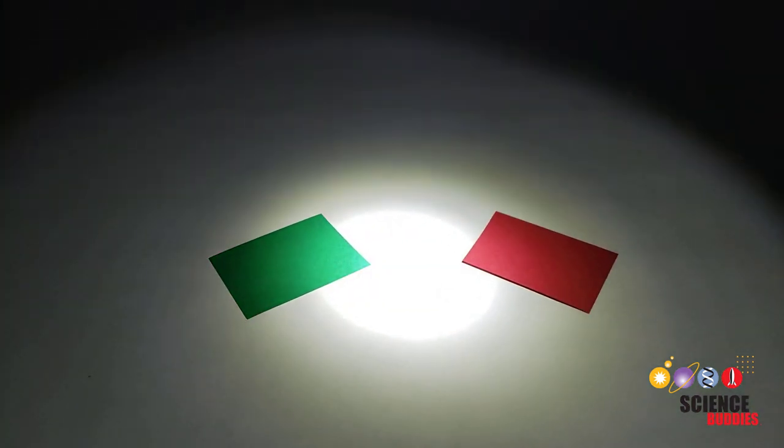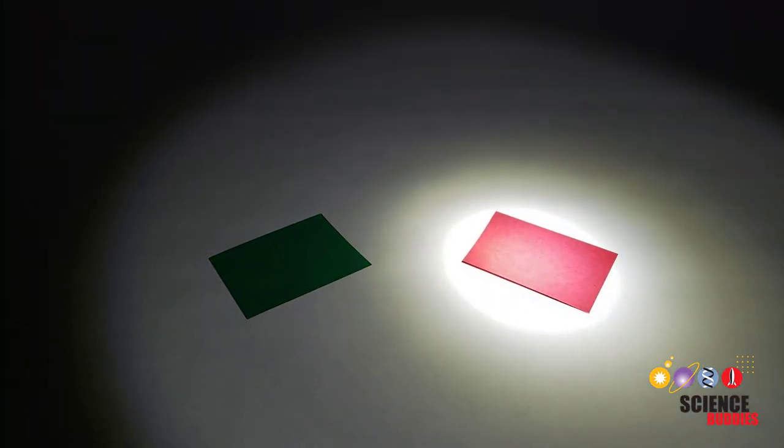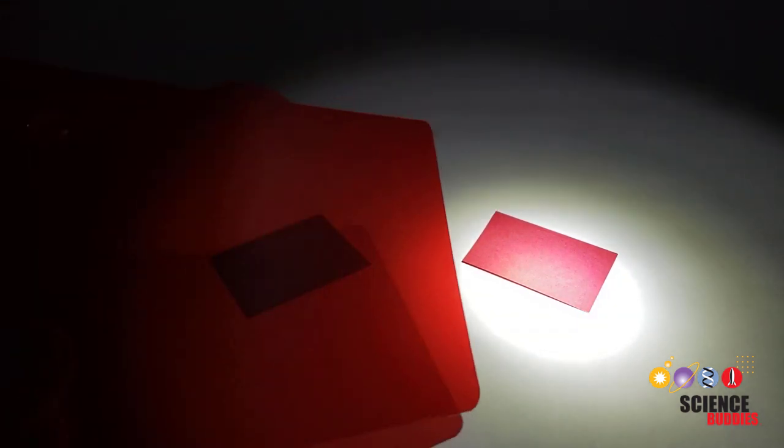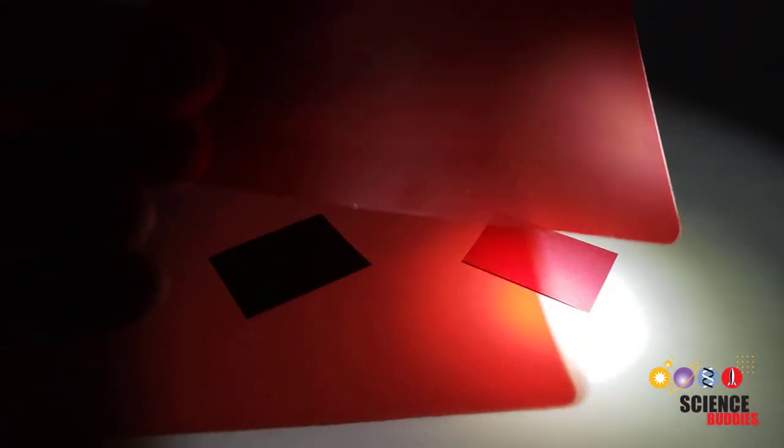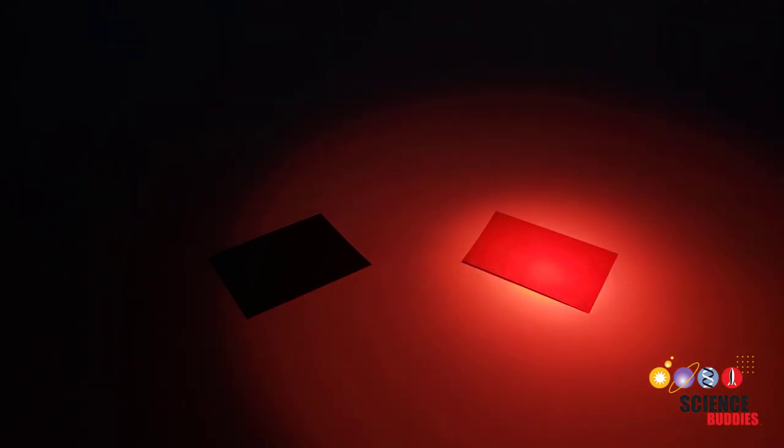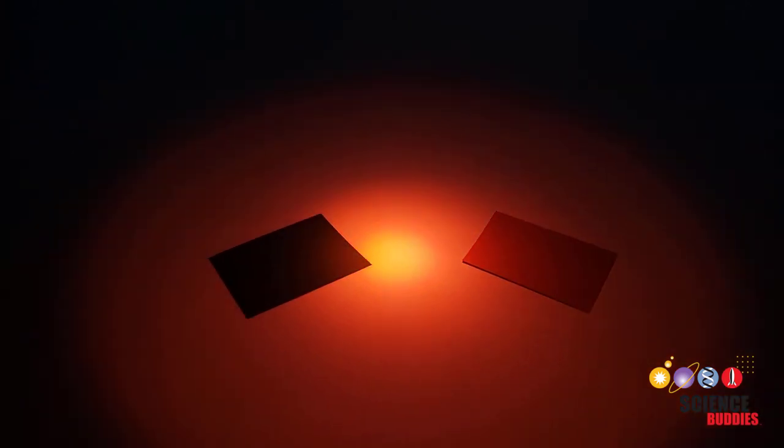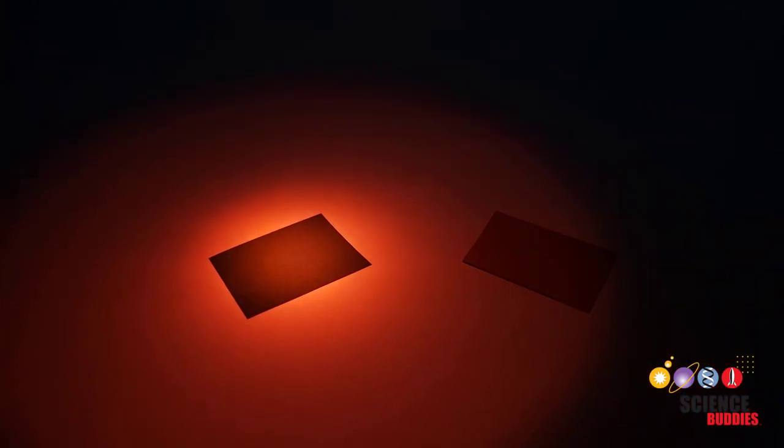What we see can change if we only send one color of light at a surface. For example, I'm going to put this red filter in front of my white flashlight. Since I'm only sending red light, that red light is still reflected and the red surface still looks red. However, the green surface now looks almost black, because it is absorbing the red light, and there is no green light for it to reflect.